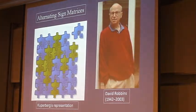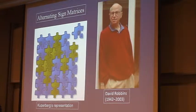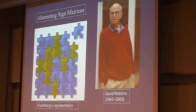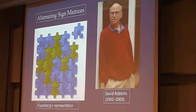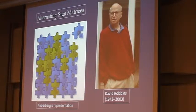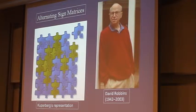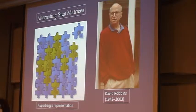But no talk about Durand's mathematics and my relationship with Durand's mathematics would be complete without some mention of alternating sign matrices. And so I'd like to conclude with just a brief overview of that story — I'm sure it's a story that's known to all of you very well — and touch on some of the things that I see in it that are particularly nice.